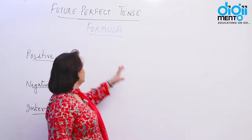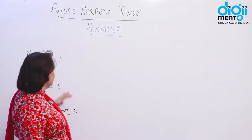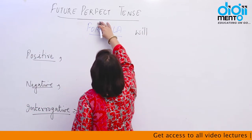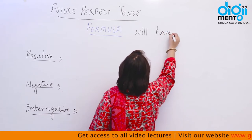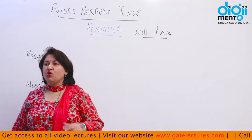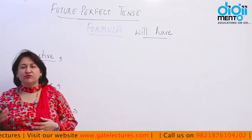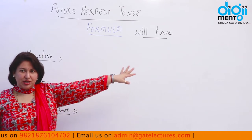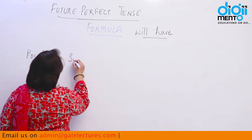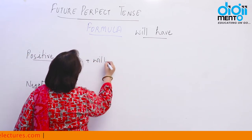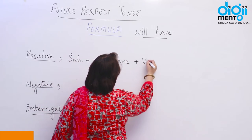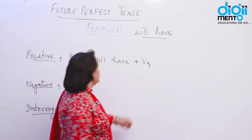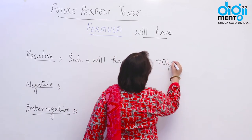Let's look into the structure — the formula for a positive, negative, and interrogative sentence. In future perfect tense, the helping verb is 'will', and for perfect tense we use 'have' regardless of the subject. The structure is: Subject + will + have + third form of the verb + object.